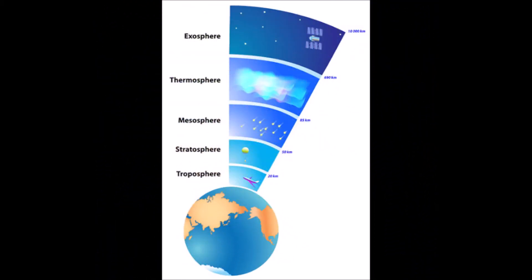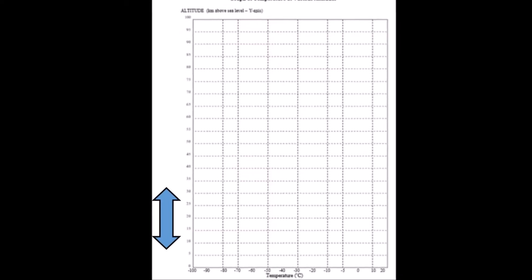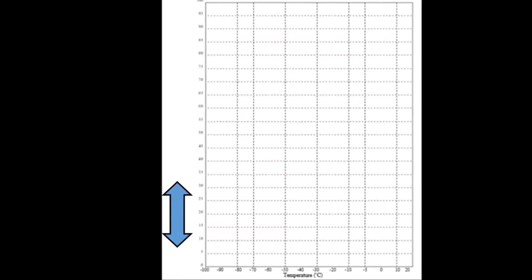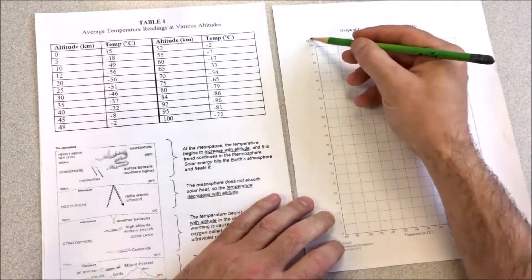So we have our y-axis or our vertical axis is the altitude in kilometers, and then our x-axis or our horizontal axis is temperature in degrees Celsius.